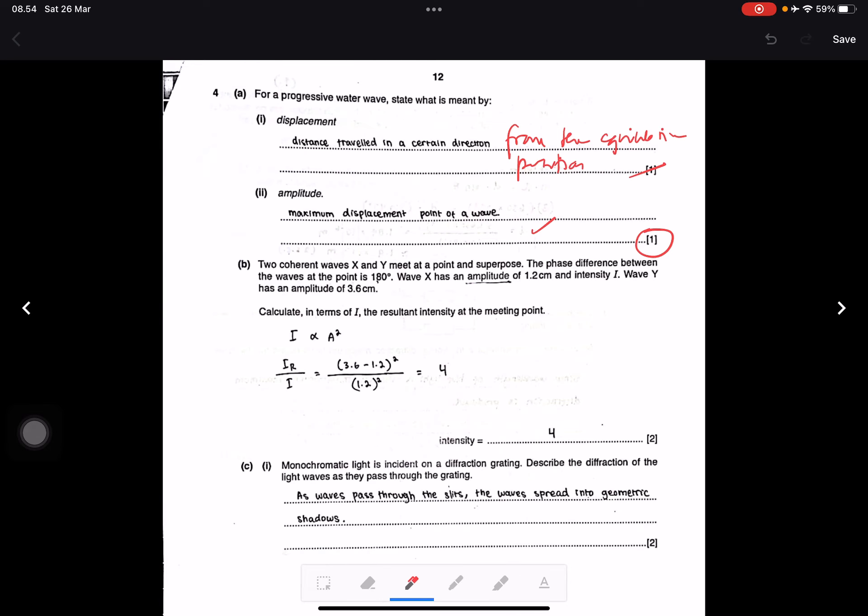Question B: Coherent waves X and Y meet at a point and superpose. The phase difference between the waves at the point is 180 degrees. Wave X has amplitude 1.2 cm and intensity I. Wave Y has amplitude 3.6 cm. Calculate in terms of I the resultant intensity at the meeting point. Intensity is proportional to amplitude squared. So I_R divided by I equals (3.6 minus 1.2) squared divided by 1.2 squared, which equals 4. Because they have I, so 4I, not only 4.